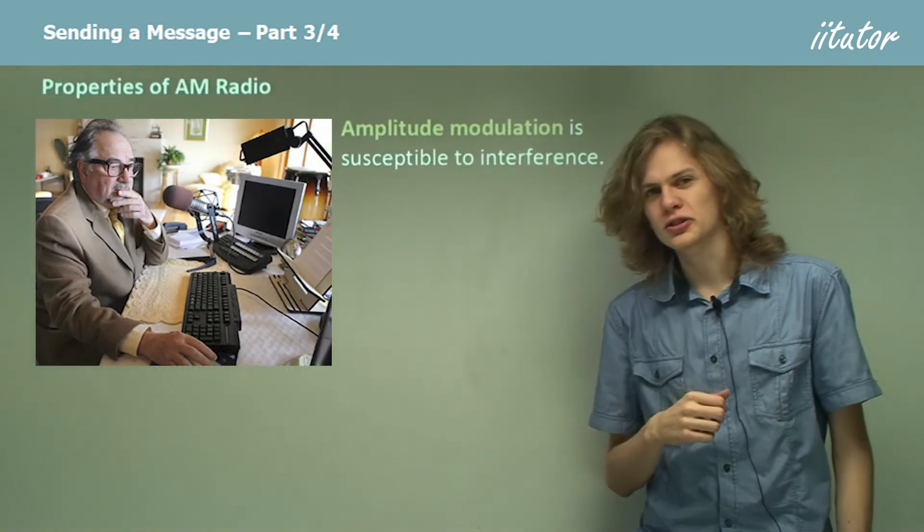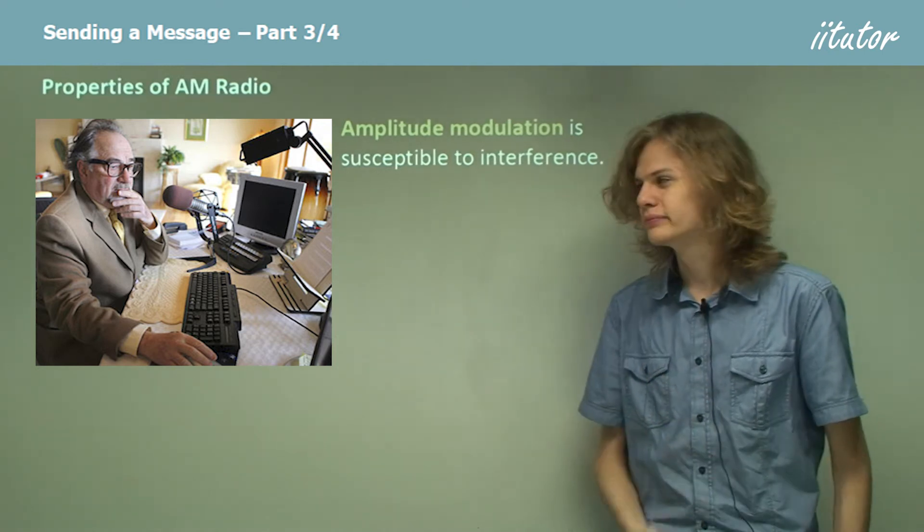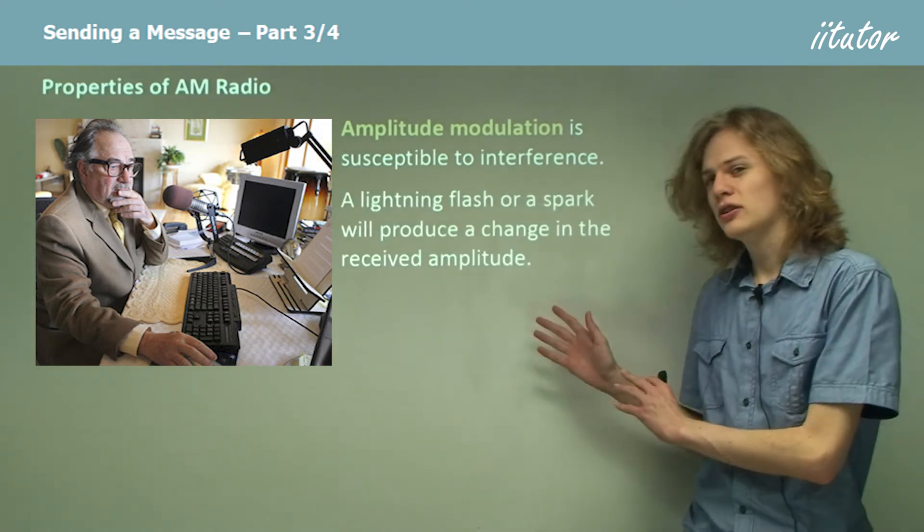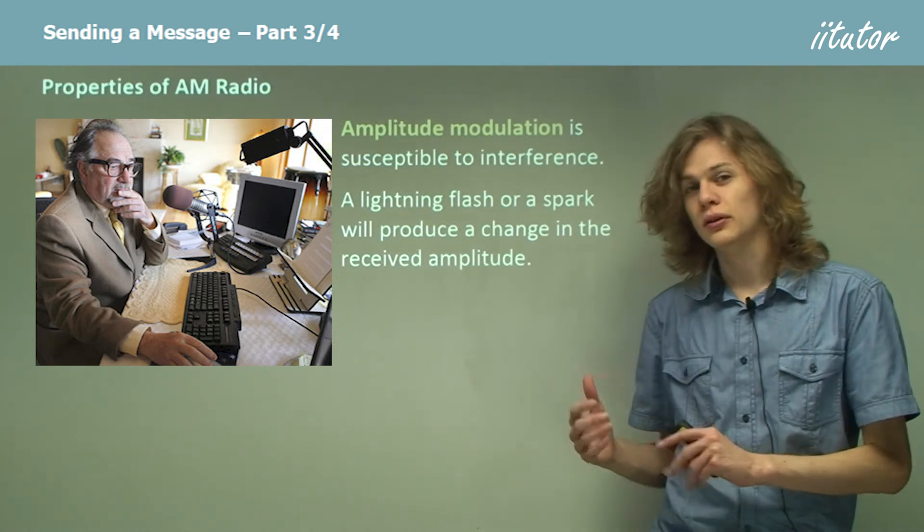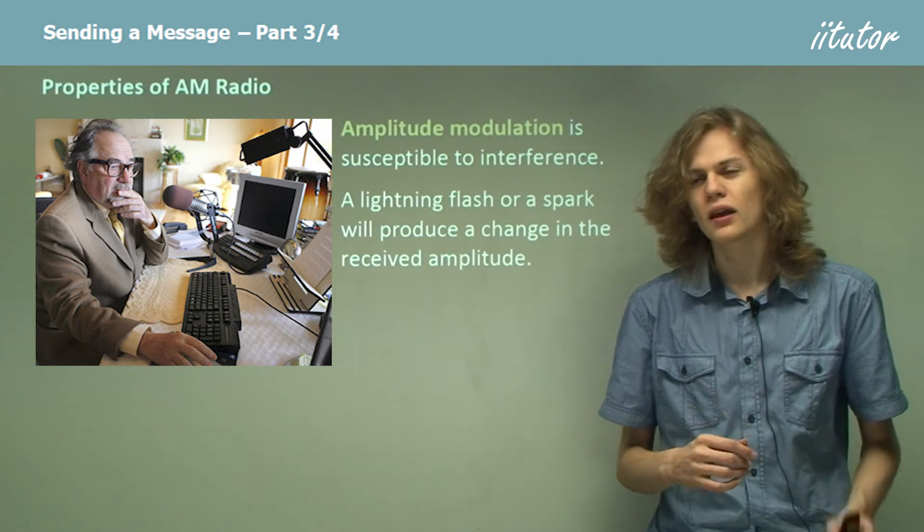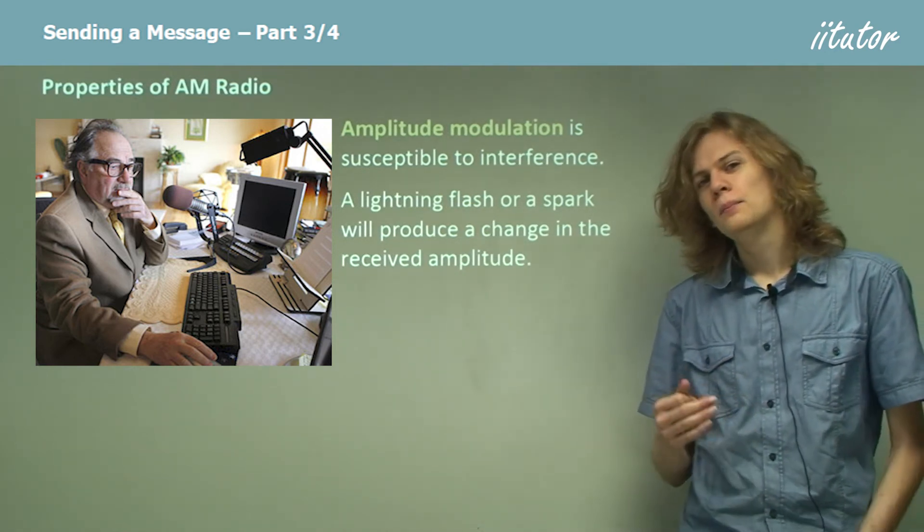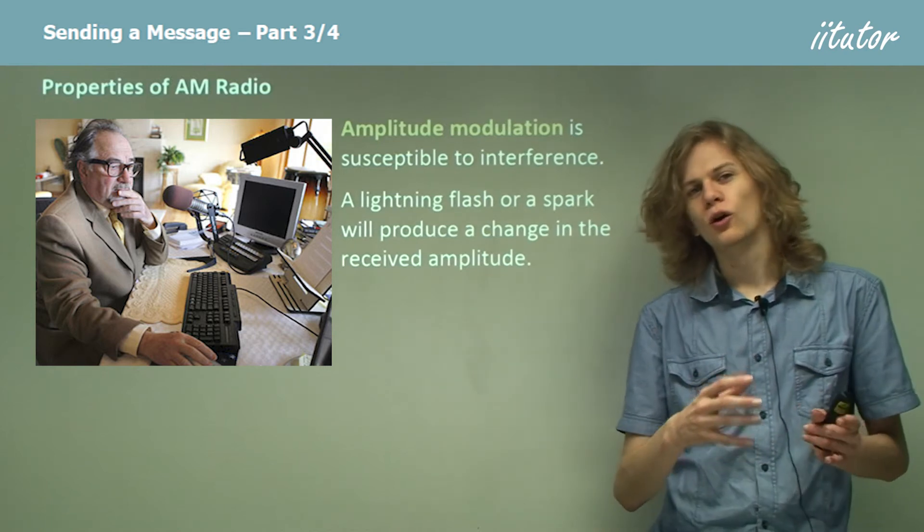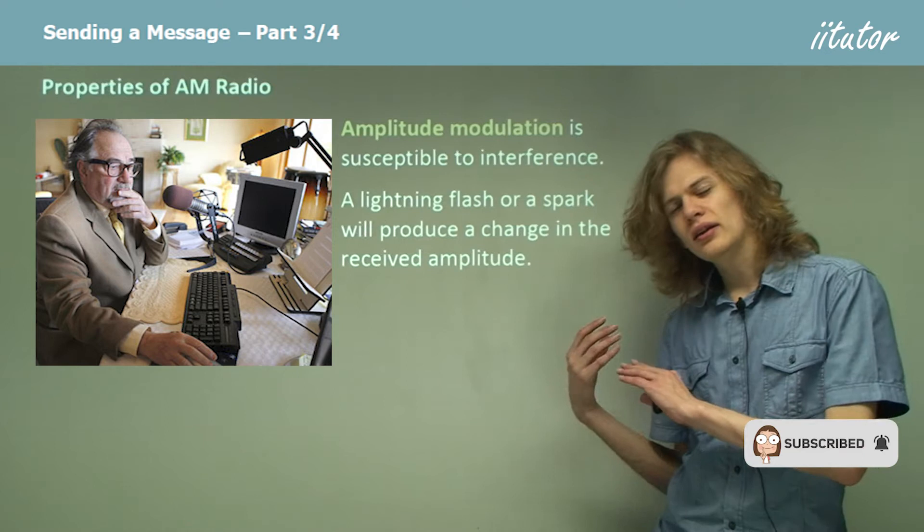Now amplitude modulation is susceptible to interference. It's one of the disadvantages that it has compared to FM radio. Now a lightning flash or a spark will in fact cause its own electromagnetic waves, including radio waves, and these will interfere with AM radio because the amplitude of the wave will increase at the point where the spark is.